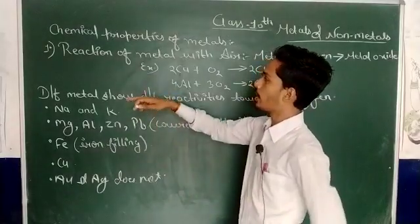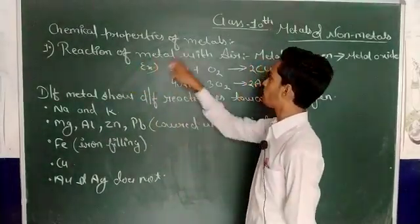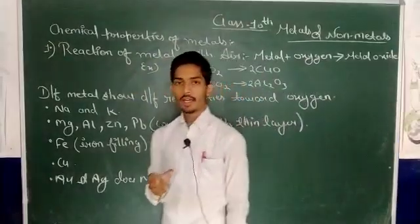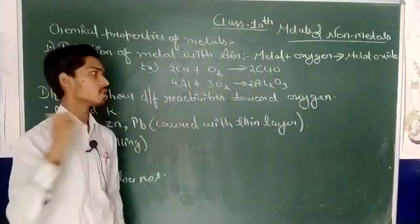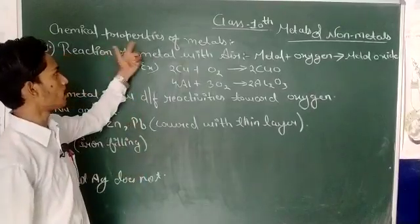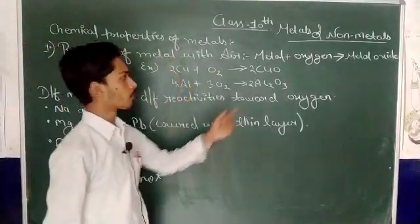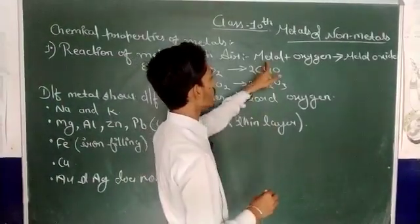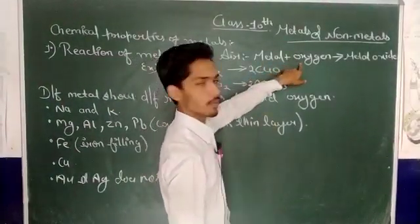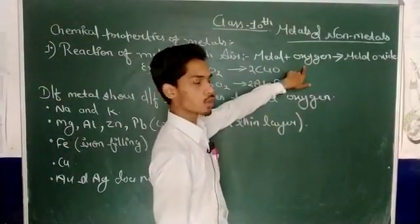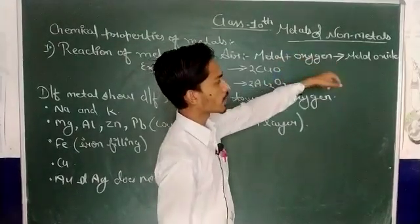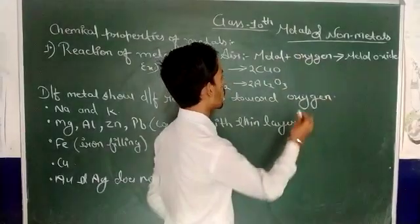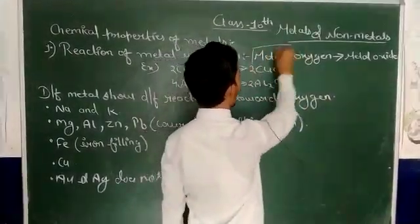First property is reaction of metals with air. This is the first topic of chemical properties of metals with air. Here we have a general reaction: metal plus oxygen. When metal reacts with oxygen, what will form? The metal oxide will form. The general reaction here is metal plus oxygen forms metal oxide.